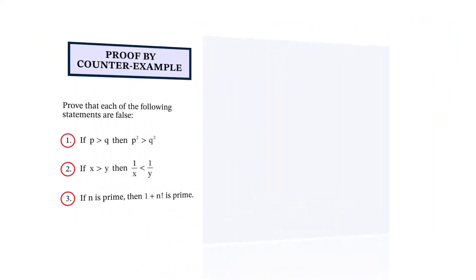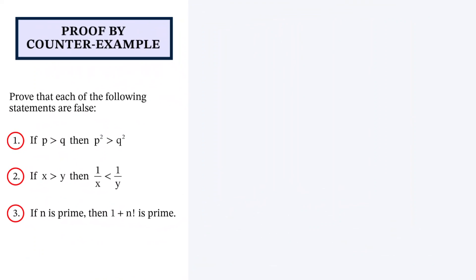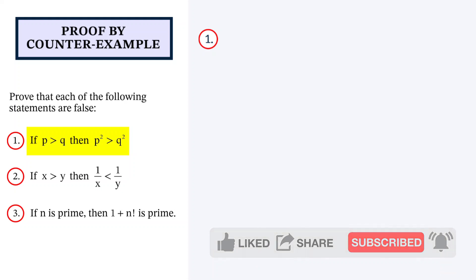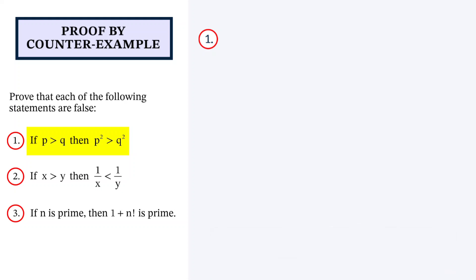Let's get started and have a look at the first question. If p is greater than q, then p squared is greater than q squared. We can try various values of p and q, and then see whether one of these sets of values will make the statement false.